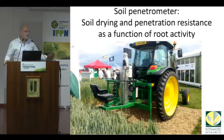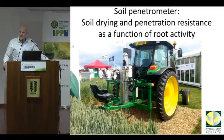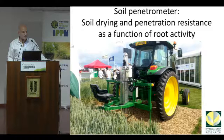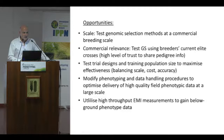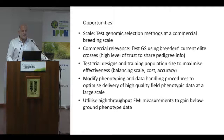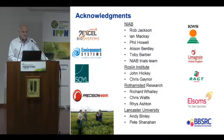Finally, the other thing we'd like to do next year is use a tractor-mounted soil penetrometer. As roots remove soil moisture, soil hardens, and you can measure soil strength with a penetrometer. Using a hydraulically driven tractor-mounted penetrometer, we're getting to the point where we can use high-throughput measurements of soil penetration resistance as a surrogate for root activity, particularly in upper soil layers. The opportunities for this project include large-scale testing of genomic selection methods relevant for commercial breeders, testing trial designs and training population size, and utilizing EMI for root phenotyping at scale.